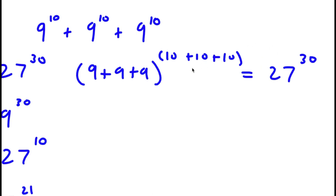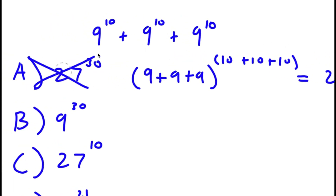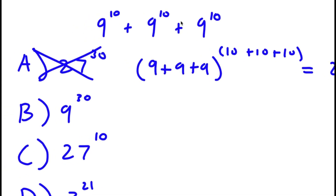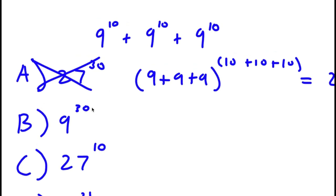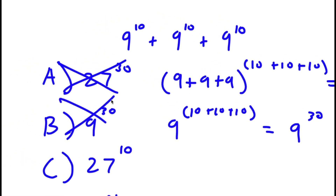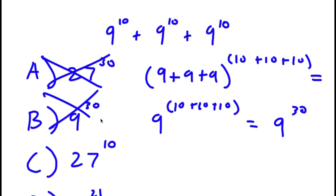However, this method is actually wrong — you can't just add the bases and add the exponents. For answer choice B, you keep the base the same and simply add the exponents: 9 to the power of 10 plus 10 plus 10, which is 9 to the power of 30. But this method is wrong as well — that's not the correct way of adding exponents.